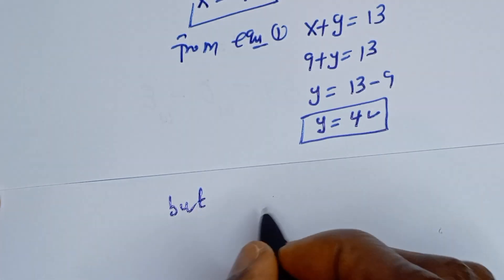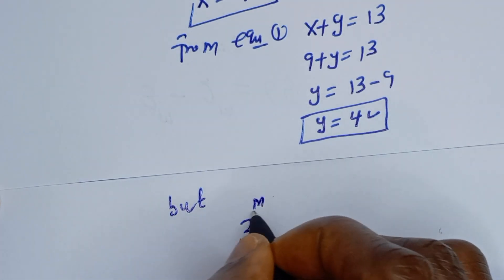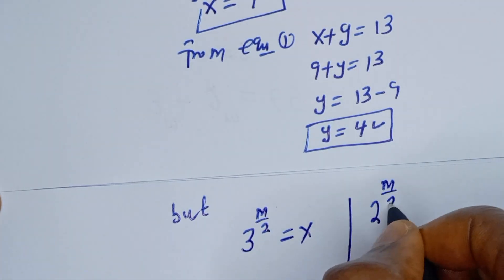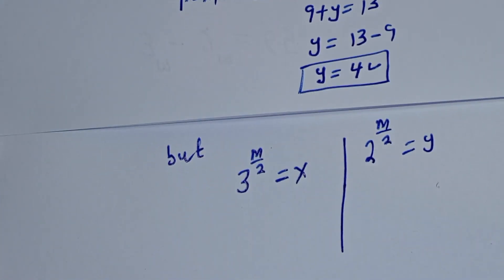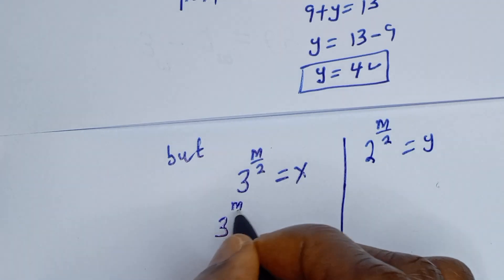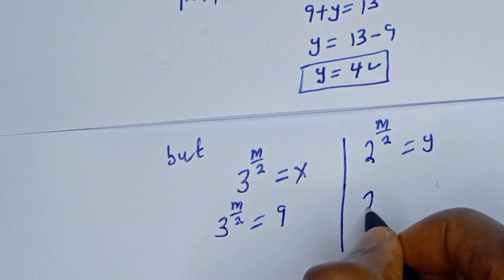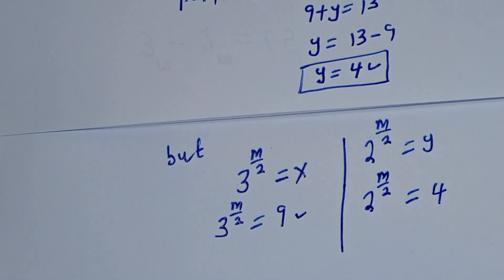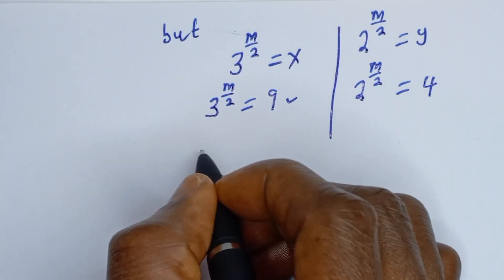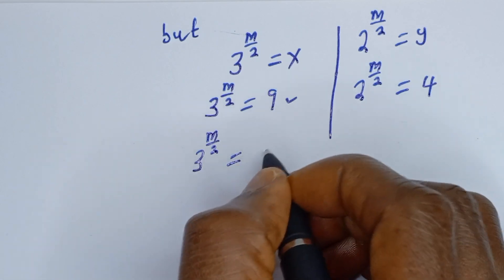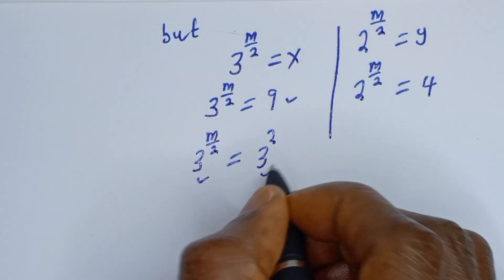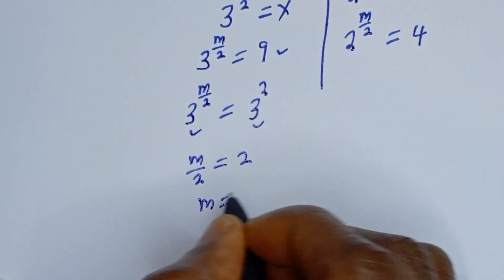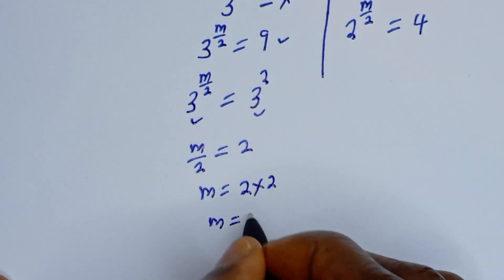Now, 3 to the power of m over 2 is equal to x, and 2 to the power of m over 2 is equal to y. So 3 to the power of m over 2 equals 9. Since 9 is 3 squared, and both sides have base 3, m over 2 is equal to 2, so m is equal to 2 multiplied by 2, giving m equal to 4.